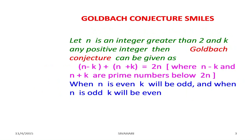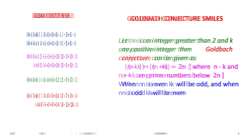Let n be an integer greater than 2 and k any positive integer. The Goldbach Conjecture can be given as (n minus k) plus (n plus k) equals 2n, where n minus k and n plus k are prime numbers below 2n. When n is even, k will be odd, and when n is odd, k will be even.